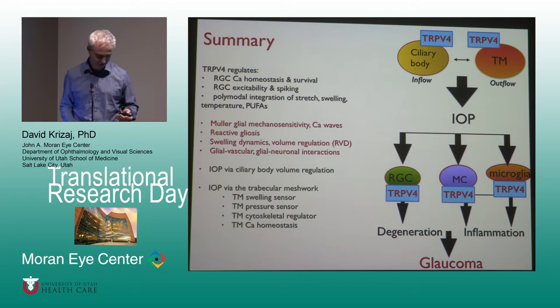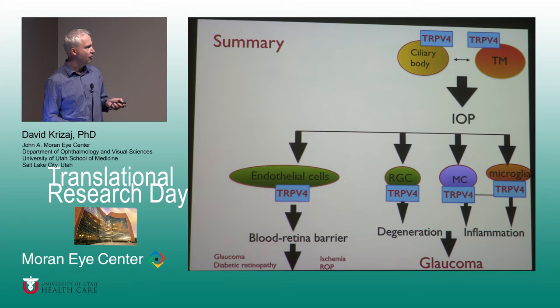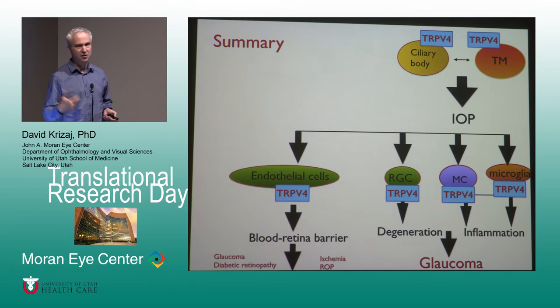I will tell you about some of our unpublished work which I think is very fascinating. Endothelial cells may be involved in glaucoma, but they also form the blood-retina barrier and are critical for all kinds of other diseases, from diabetes to ischemia, endotheliopathy of prematurity, and macular degeneration.